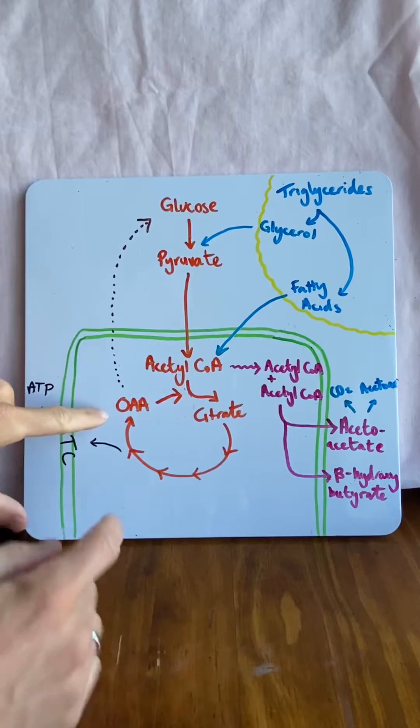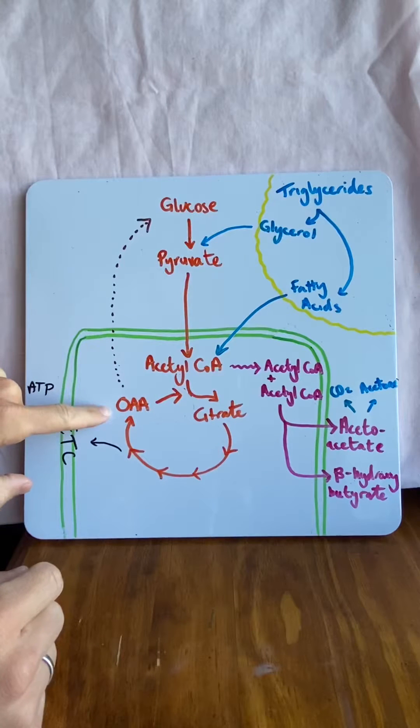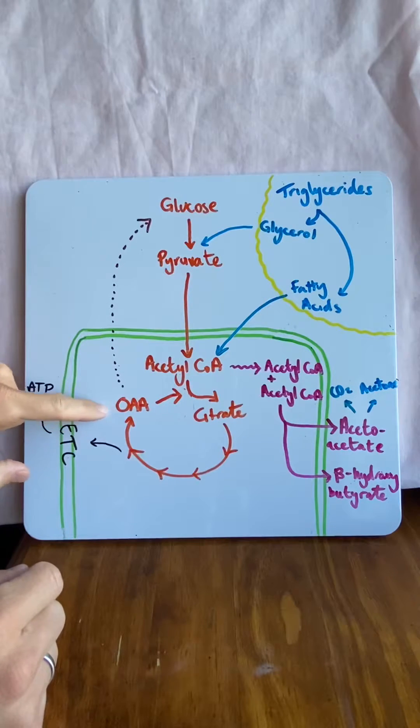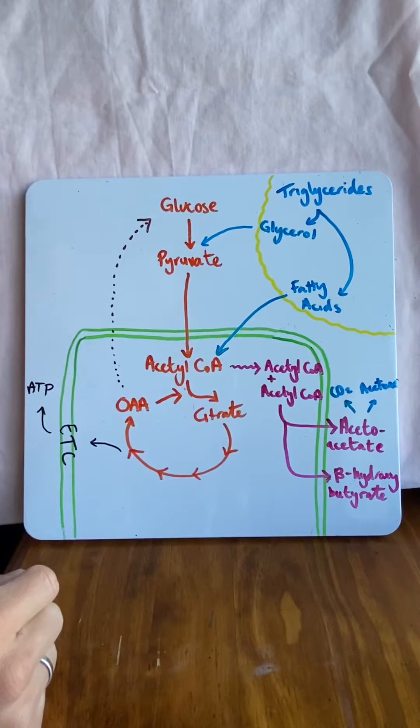One way that we do it is this: the Krebs cycle has a product called oxaloacetate. Oxaloacetate can actually jump out of the mitochondria and turn back into glucose, which is great.